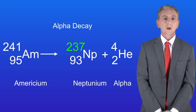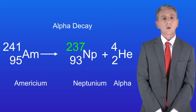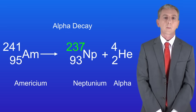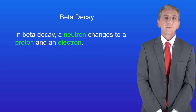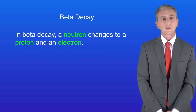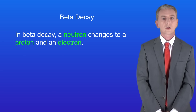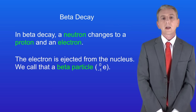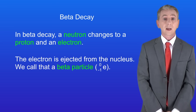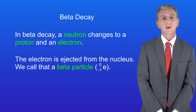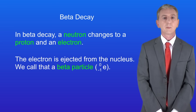Let's take a look now at nuclear equations for beta decay. Remember that in beta decay a neutron changes to a proton and an electron. The electron is ejected from the nucleus and we now call it a beta particle.